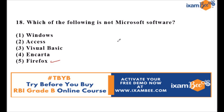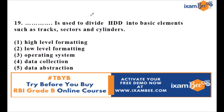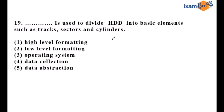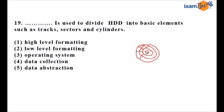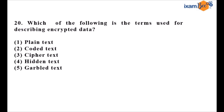Question nineteen says: what is used to divide an HDD into basic elements such as tracks, sectors, and cylinders? The hard disk stores information in a circular pattern on platters — these circular paths are called tracks, and each track is divided into several sectors. More than one sector forms a cluster. This process is called low-level formatting, which is the answer.